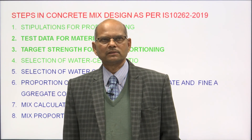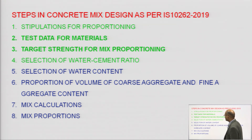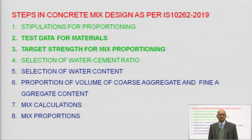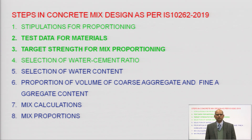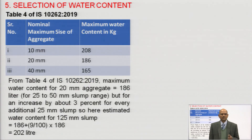In the previous lecture I had discussed four parameters: stipulations for proportioning, test data for materials, target strength for mix proportioning, and selection of water cement ratio. These four portions we have discussed. Now we will be discussing selection of water content, proportion of volume of coarse aggregate and fine aggregate content, mix calculations, and mix proportions.